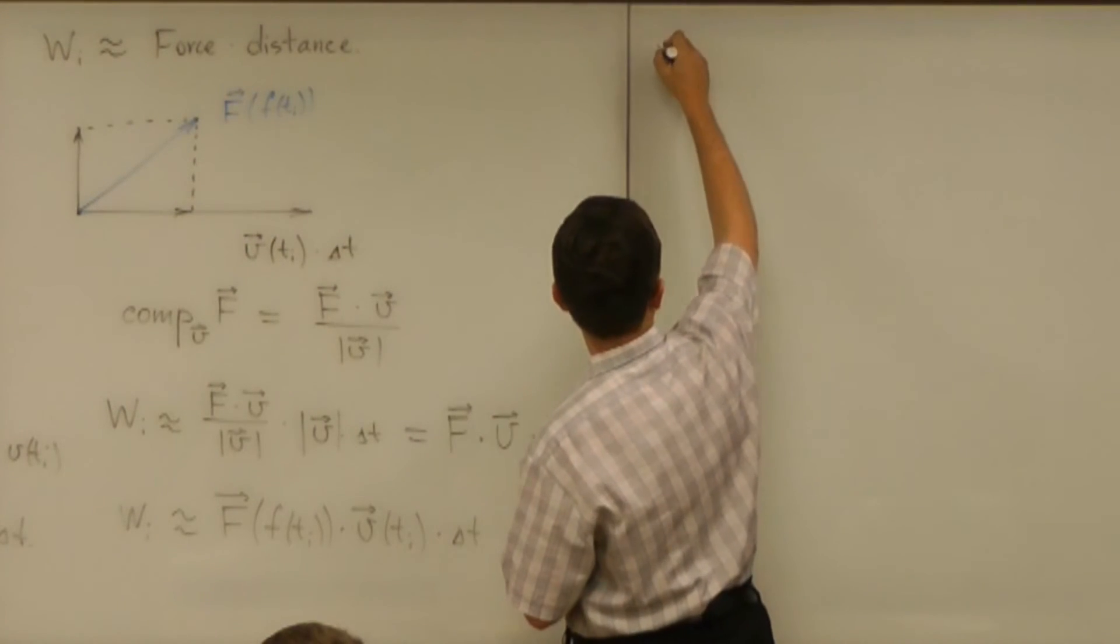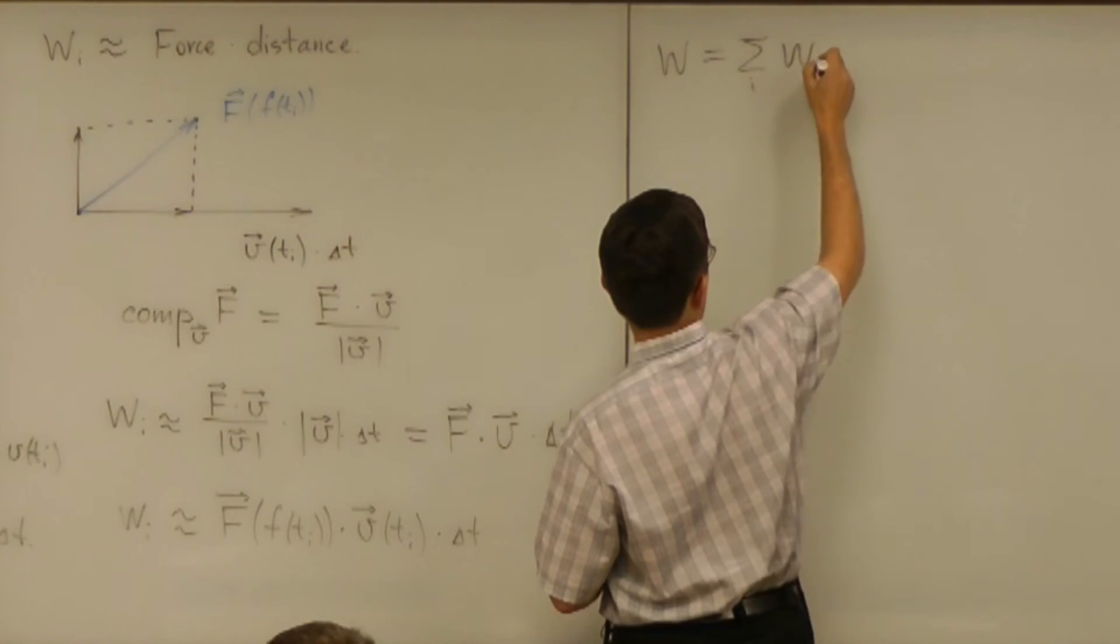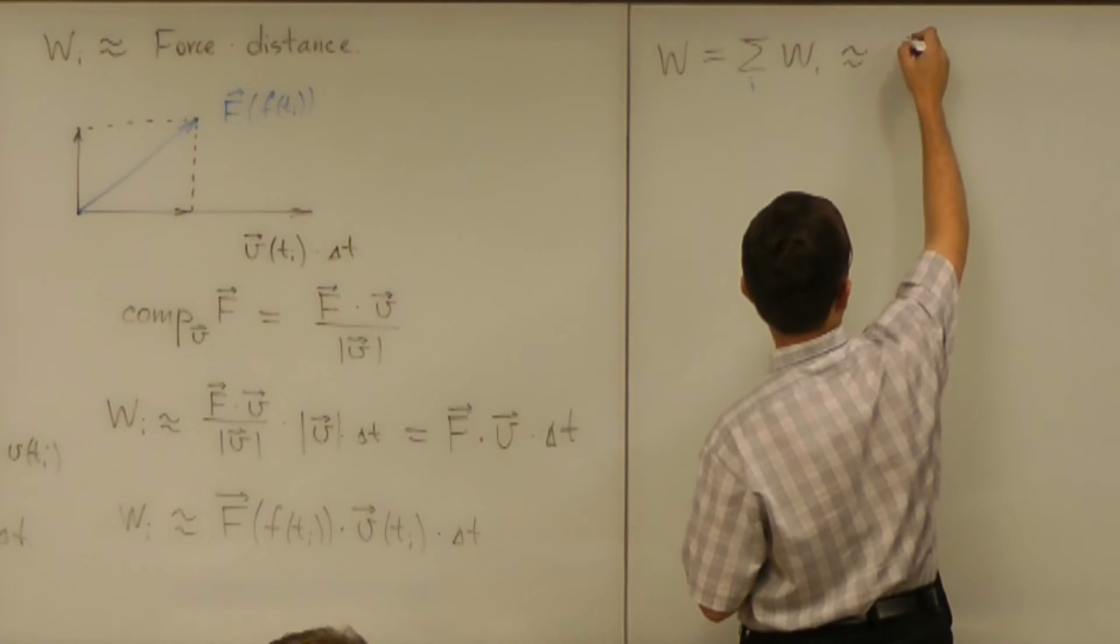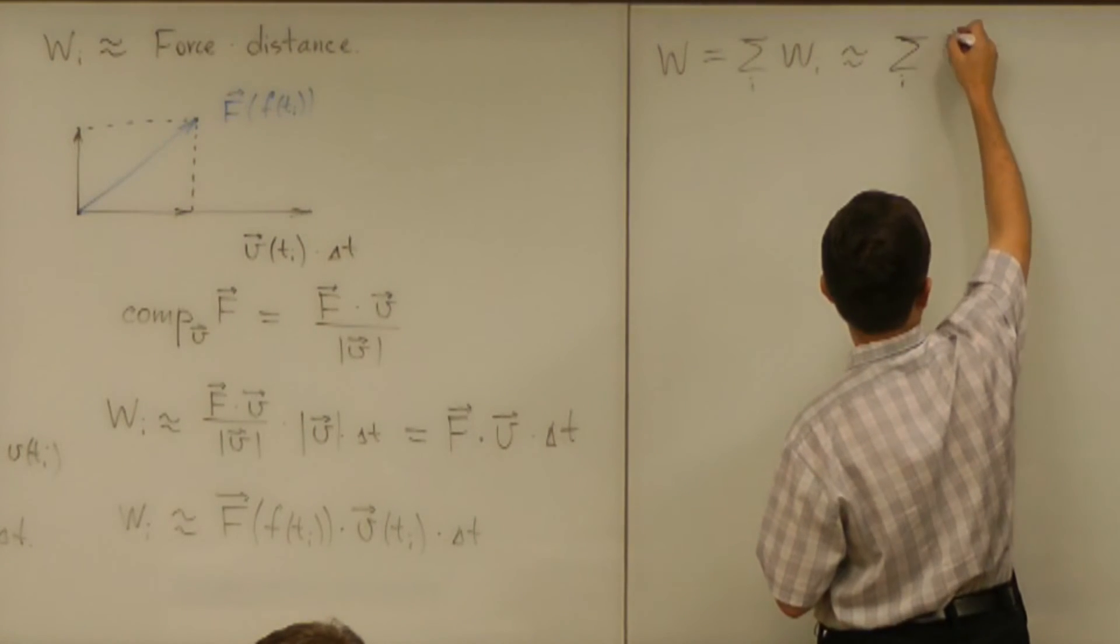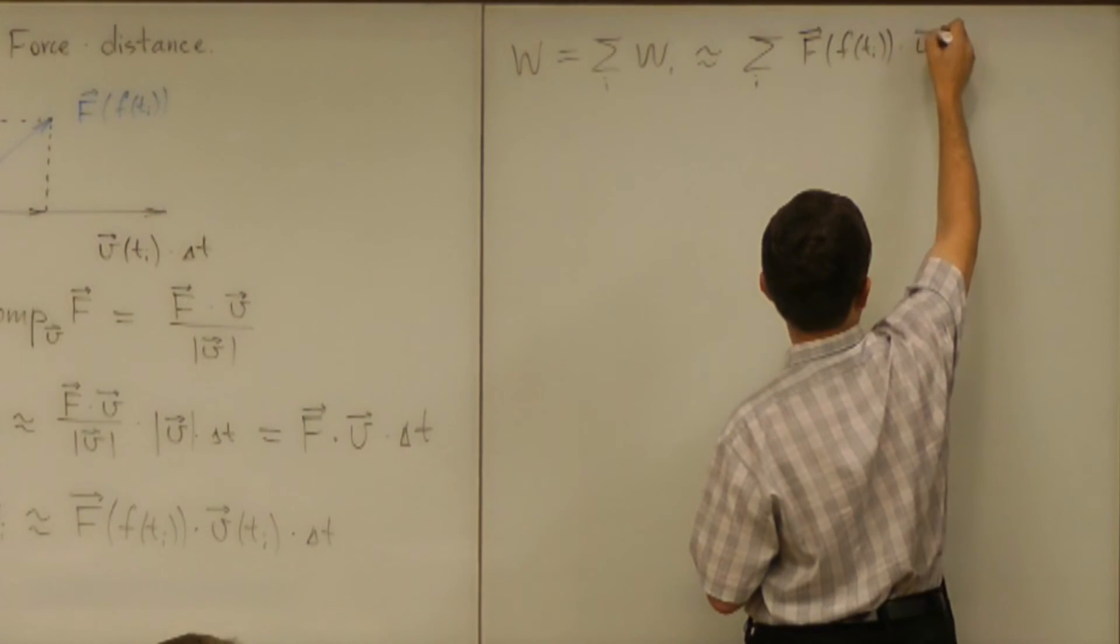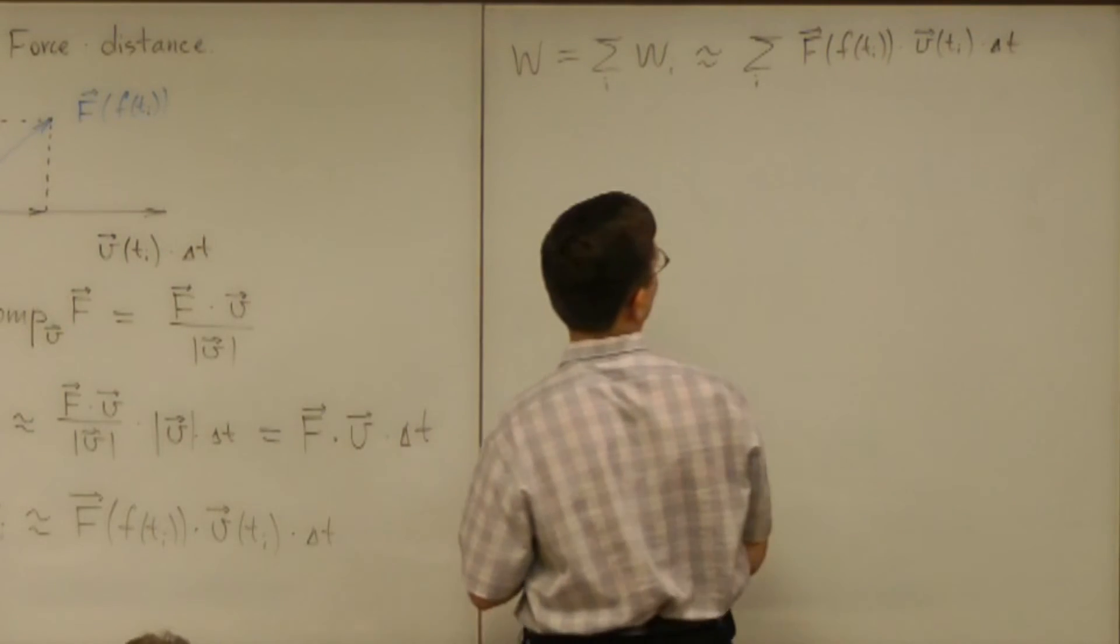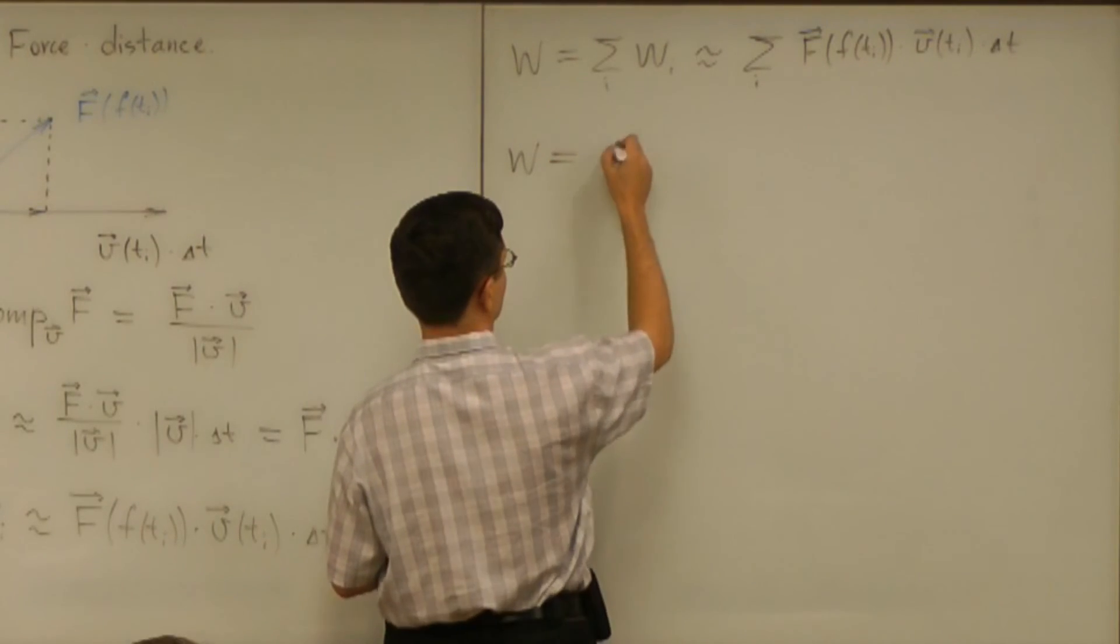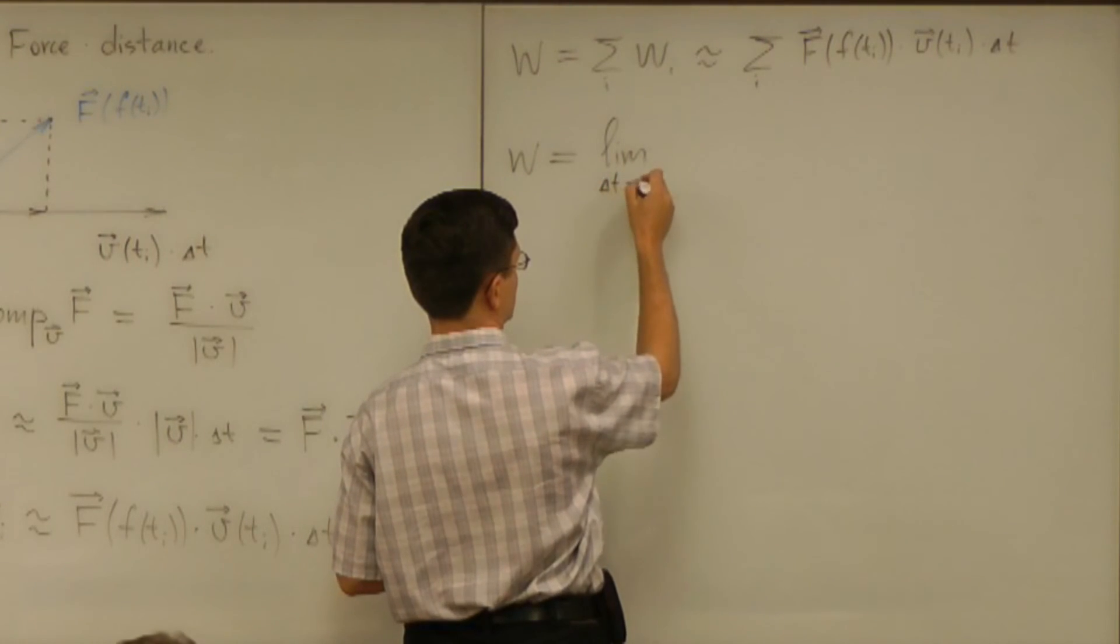And now the total work is sum of all the little works. And that is approximately the sum of those. And of course the work is now expected to be the limit of sums like that as delta T goes to zero.